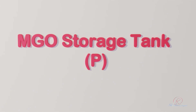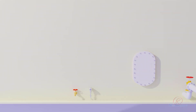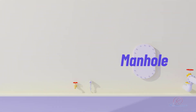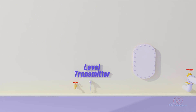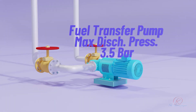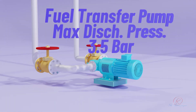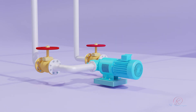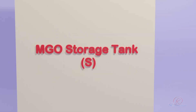The MGO storage tank is located on the port side with a main hole access, level transmitter, and drain valve. The fuel or MGO transfer pump has a maximum discharging pressure of 3.5 bar. There is also an MGO storage tank on the starboard side.